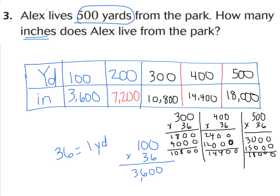I went ahead and showed the work just to show the table. 300 yards would equal 10,800. 400 yards would equal 14,400. And 500 yards would equal 18,000. I hope your answers agreed with mine.